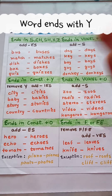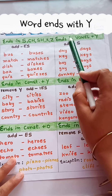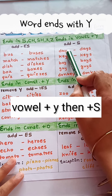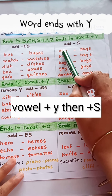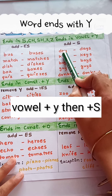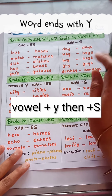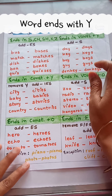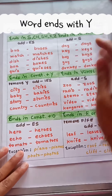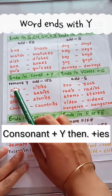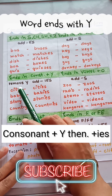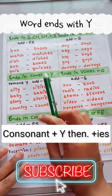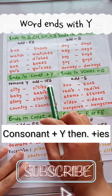When the word ends with y and there is a vowel before it, we add s. But when the word ends with a consonant before y, then we remove the y and add ies to make it plural.